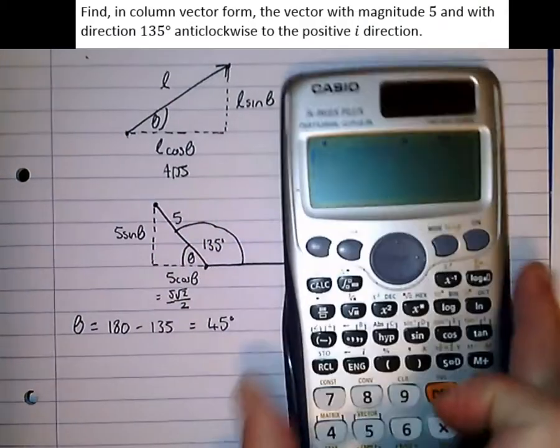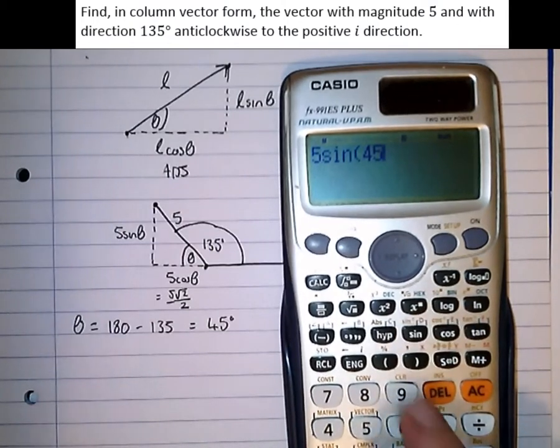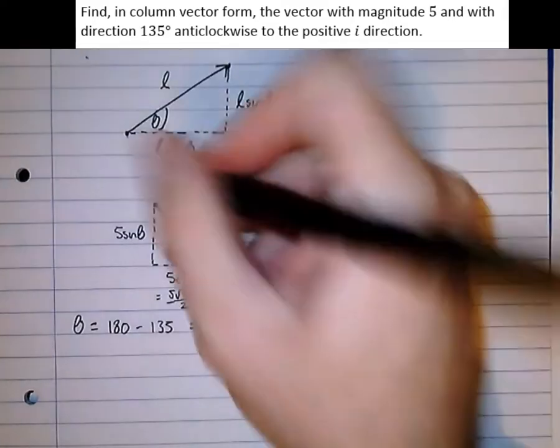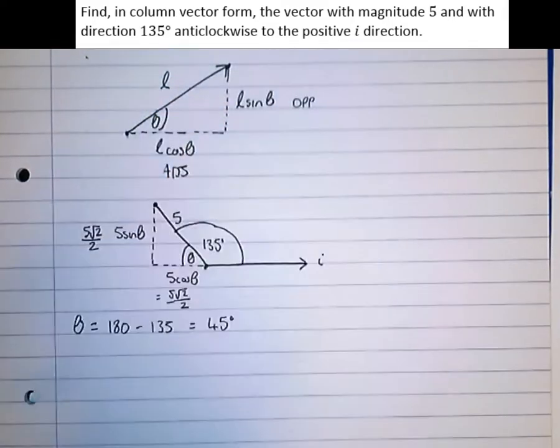And 5 sin 45, which is equal to also 5 root 2 over 2.